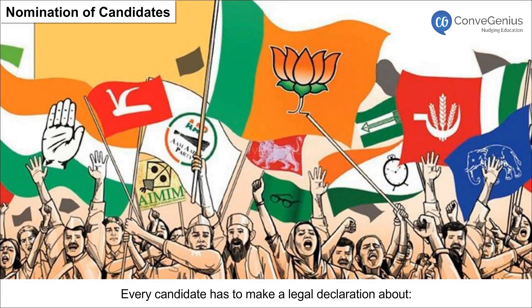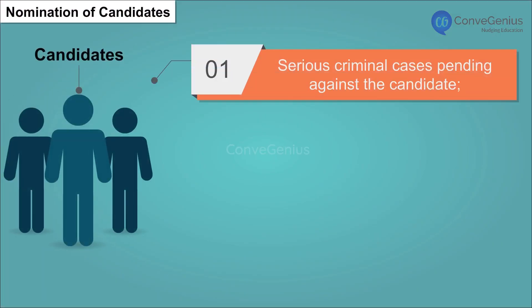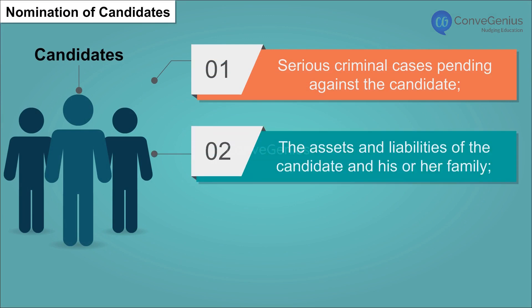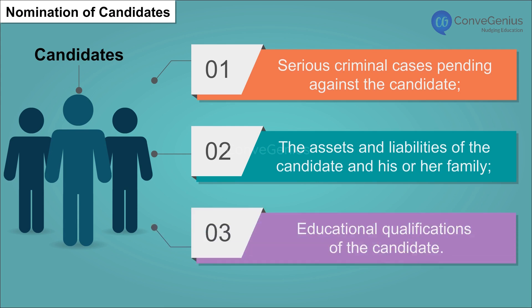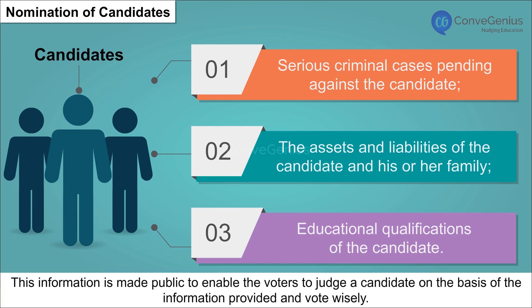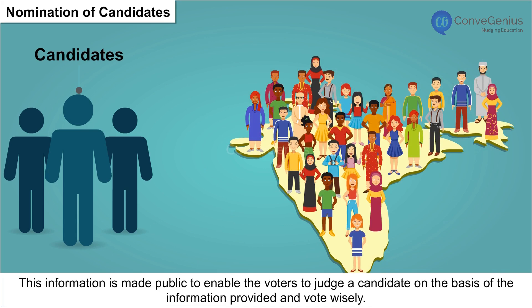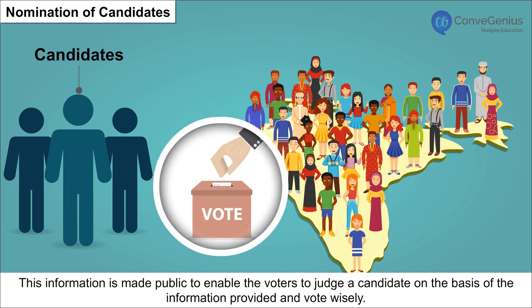Every candidate has to make a legal declaration about: 1. Serious criminal cases pending against the candidate. 2. The assets and liabilities of the candidate and his or her family. 3. Educational qualifications of the candidate. This information is made public to enable voters to judge a candidate on the basis of the information provided and vote wisely.